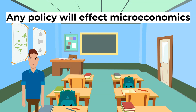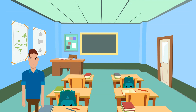Any government decision will also have microeconomic impacts. For example, a government decision to reduce tax will allow firms to have higher post-tax profits, which may increase investment and therefore increase efficiency.